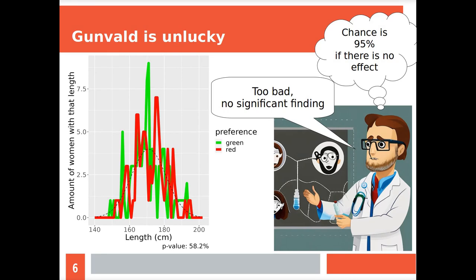Gunvald does a statistical test called a t-test to see if the mean height of women in one group is different from the other group. The test gives you something called the p-value. If the p-value is zero, it means there's very likely to be really an effect. If the p-value is higher, we say this is probably chance. The magic p-value is five percent. In biology we use five percent as a cut-off. If a p-value is below five percent, we say this is a significant finding.